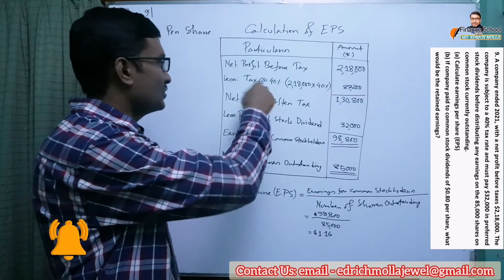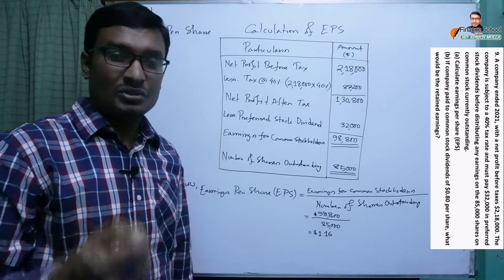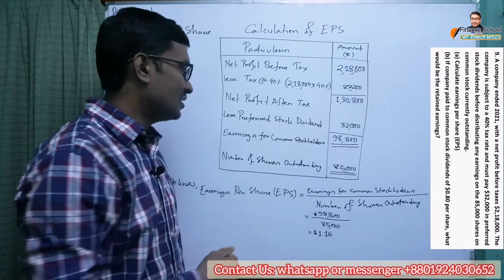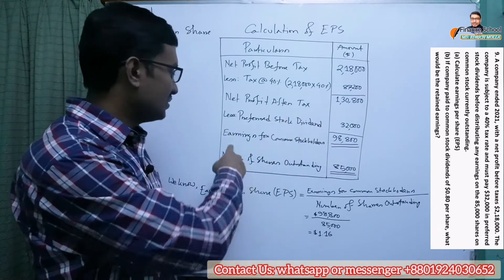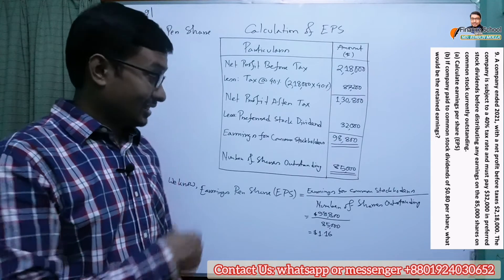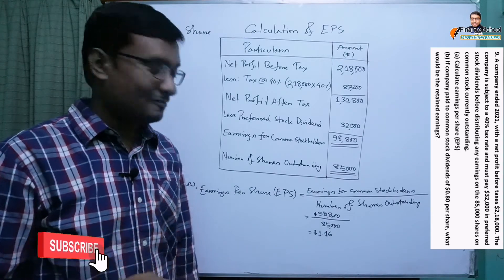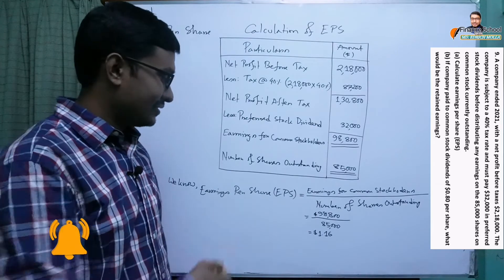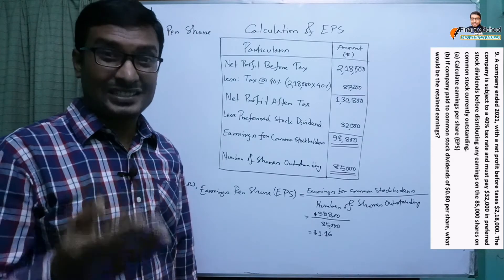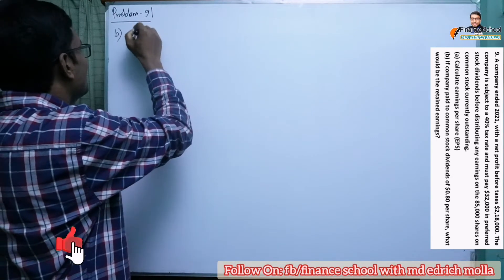To recap: we considered net profit before tax, subtracted tax at 40% to get net profit after tax, then subtracted the preferred stock dividend of $32,000 to get earnings for common stockholders of $98,800. Dividing by 85,000 shares gives EPS of $1.16. Now we move forward to compute Requirement B: retained earnings.